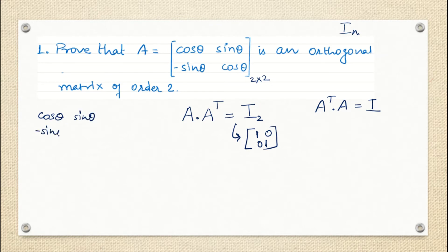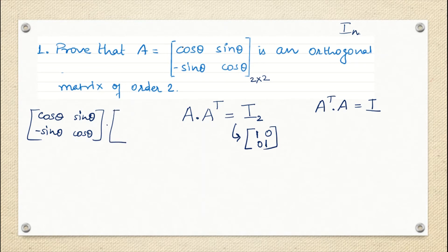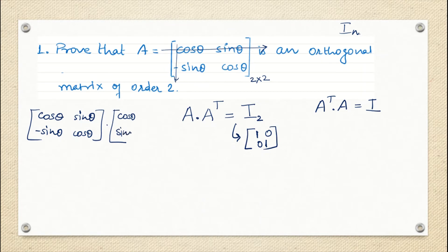This is my matrix A. Now I am going to multiply it with AT. What is A transpose? If A is this matrix, then A transpose is formed by writing each row in column fashion — the first row is written as the first column. So the first row [cos θ, sin θ] becomes the first column, and the second row [−sin θ, cos θ] is written as the second column of AT.